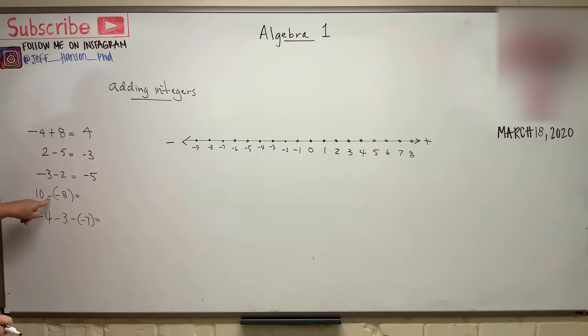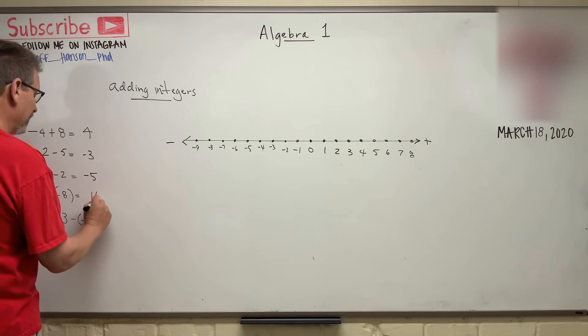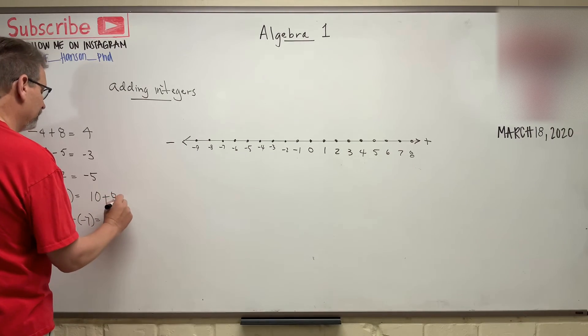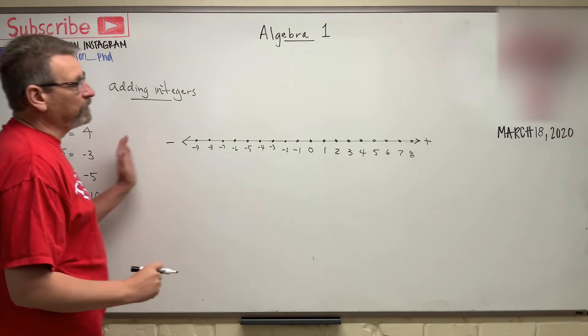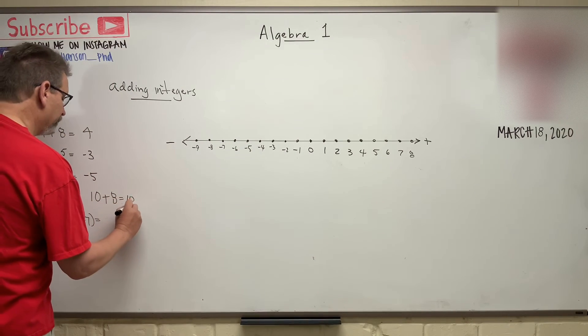And then ten minus negative eight. So what do you do when you have minus and then another minus? Well, when you have a minus and minus, your sign actually flips. So ten minus negative eight actually becomes ten plus eight, which we know if you go to ten and then you go eight more, you're at eighteen.